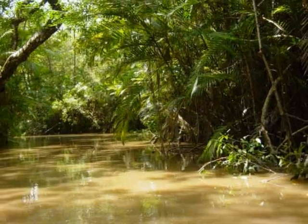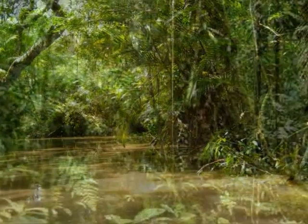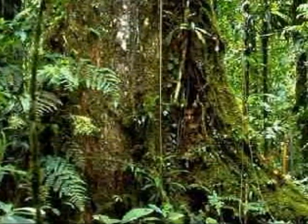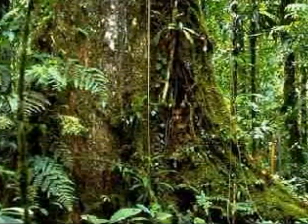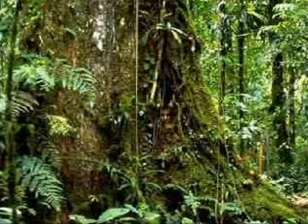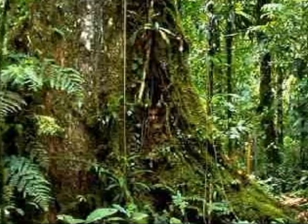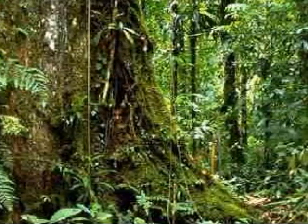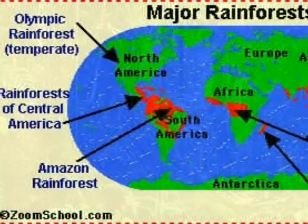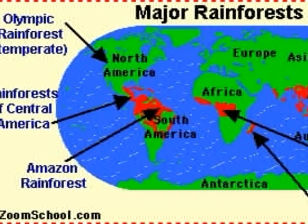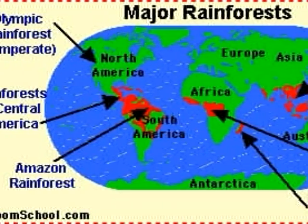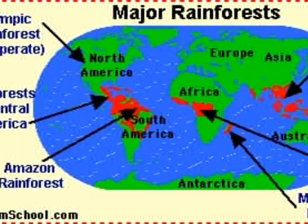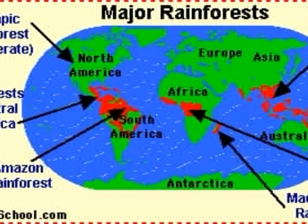Do you know there are two types of rainforests — the temperate and the tropical. Tropical rainforests are found close to the equator.